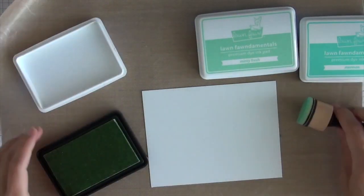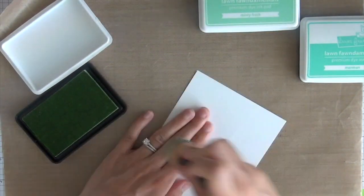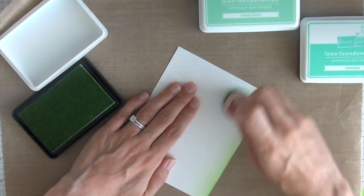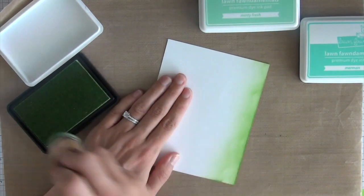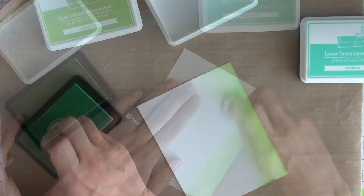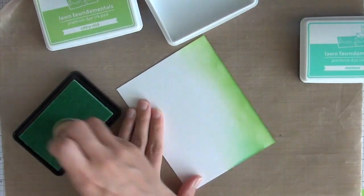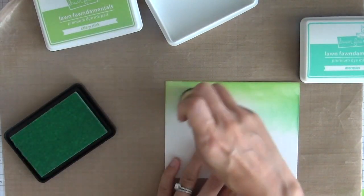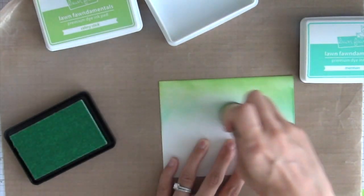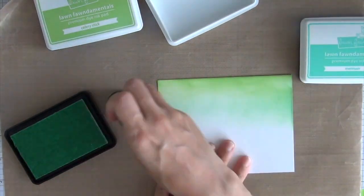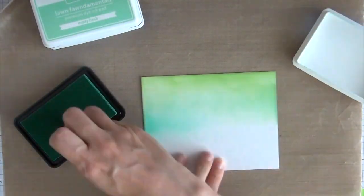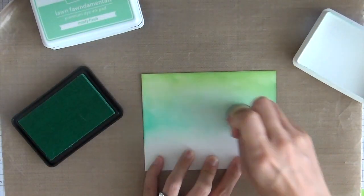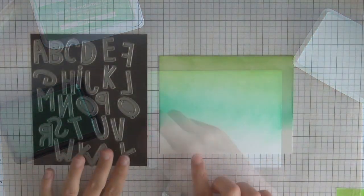Now that the background of the card is complete, I'm going to start working on my sentiment. I'll be using Kohl's ABCs to die cut the sentiment out. In order to color in the letters, I'm going to sponge some Lawn Fawn ink onto white cardstock to create a gradient of color. First I sponged on some Celery Stick, then some Minty Fresh ink, and the last color I'll use is Merman. This goes with the same color scheme that I used with the Copic markers.